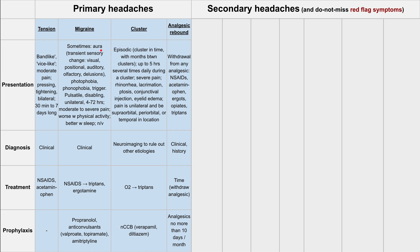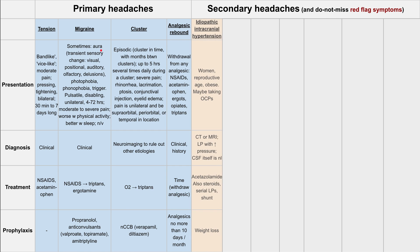Those are the primary headaches. Next let's talk about secondary headaches, which usually have another etiology or process in the body causing pain that goes to the head or face. Let's start with idiopathic intracranial hypertension. This usually presents in a woman of reproductive age who is sometimes overweight and might be taking oral contraceptive pills, which have been linked as a risk factor.